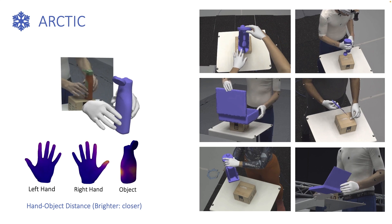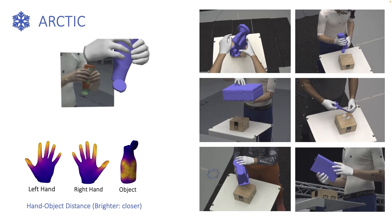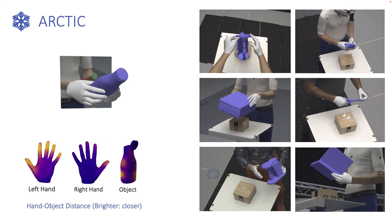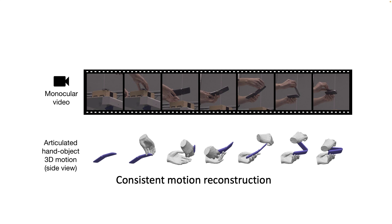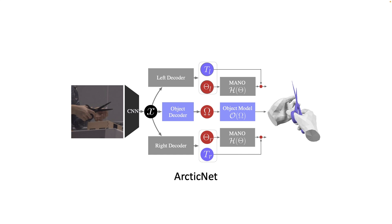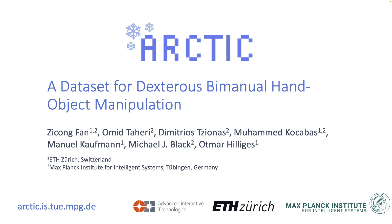To conclude, we present a large-scale video dataset called Arctic, containing accurate 3D meshes of two hands dexterously manipulating articulated objects. We present two novel tasks on Arctic: consistent motion reconstruction and interaction field estimation. We introduce ArcticNet, a baseline for the reconstruction task, and InterField, a baseline for interaction field estimation. Our data, models, and code are available for research.